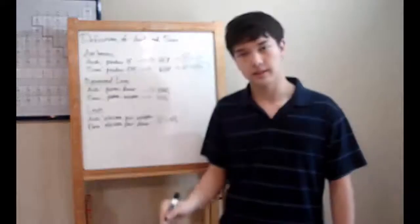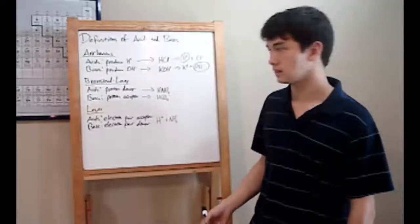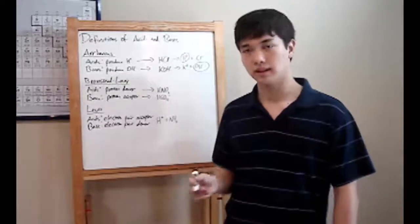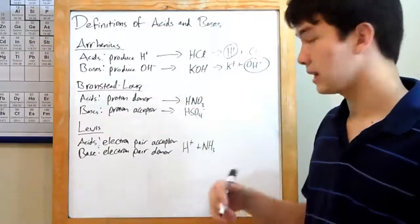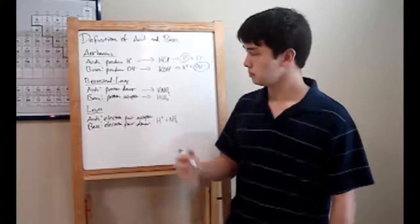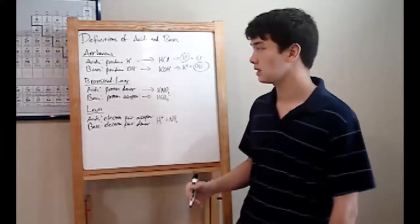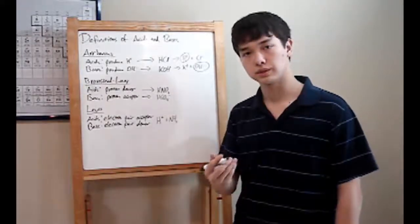The Bronsted-Lowry definition expanded on the definition of bases, where he kept acids mostly the same. He defined acids as proton donors, and bases as proton acceptors. Proton donor means more or less the same thing as the Arrhenius definition, producing H plus.